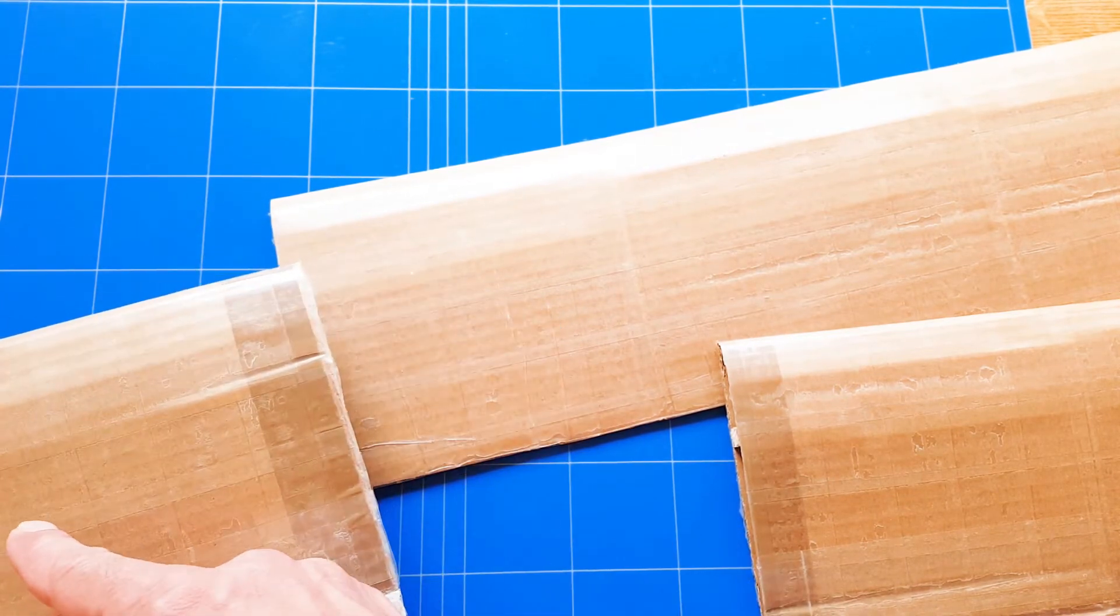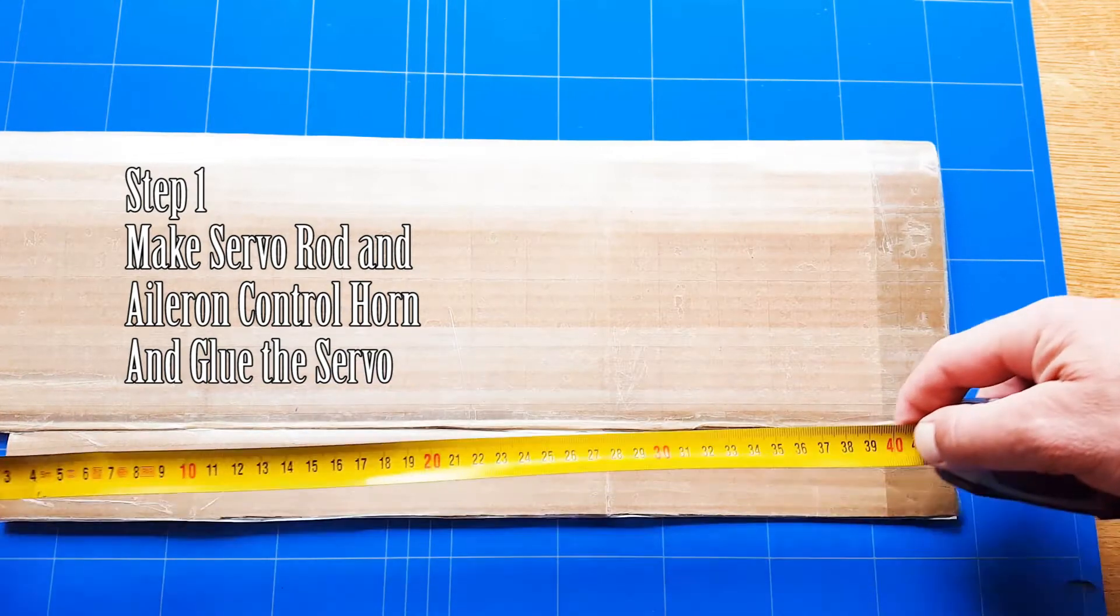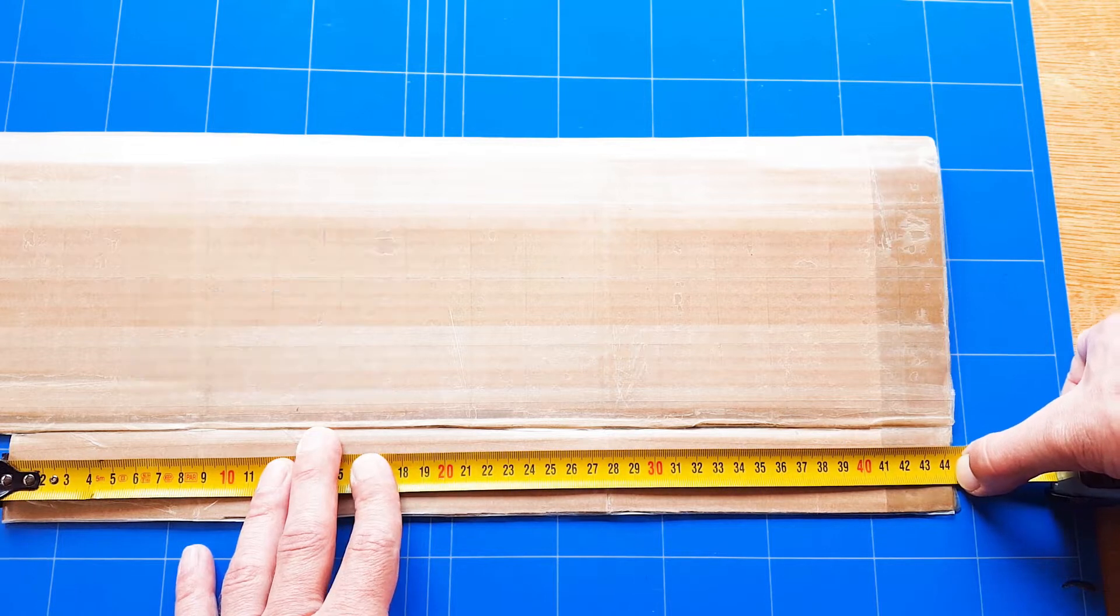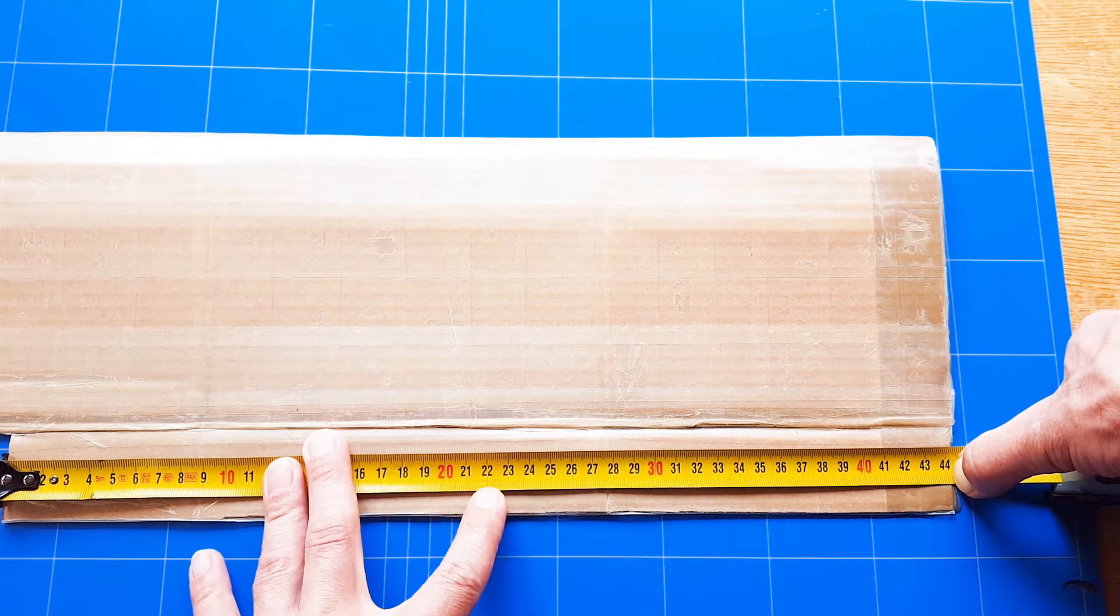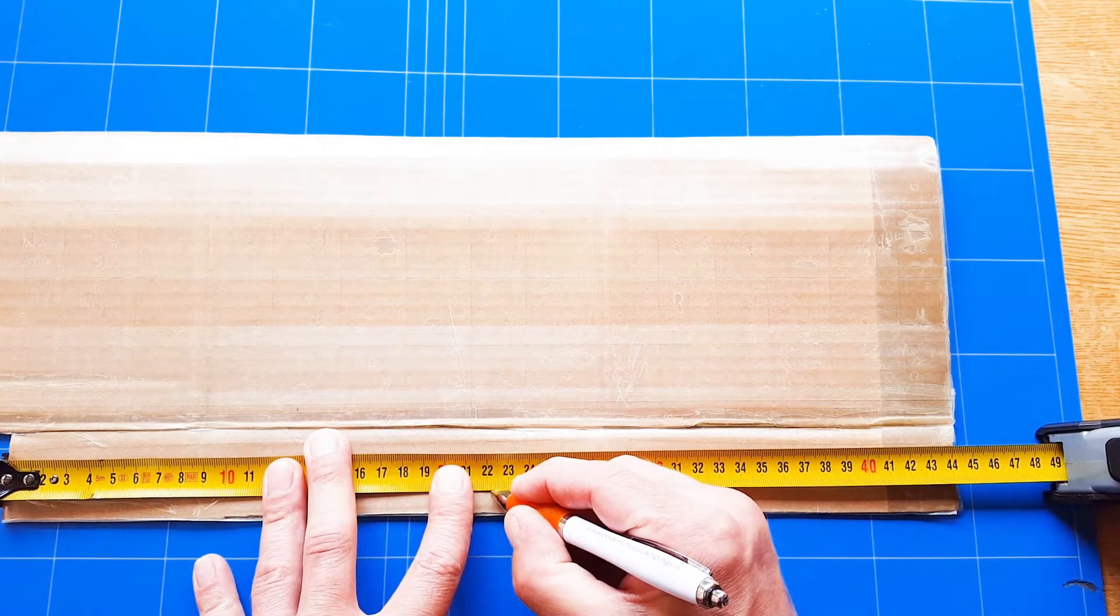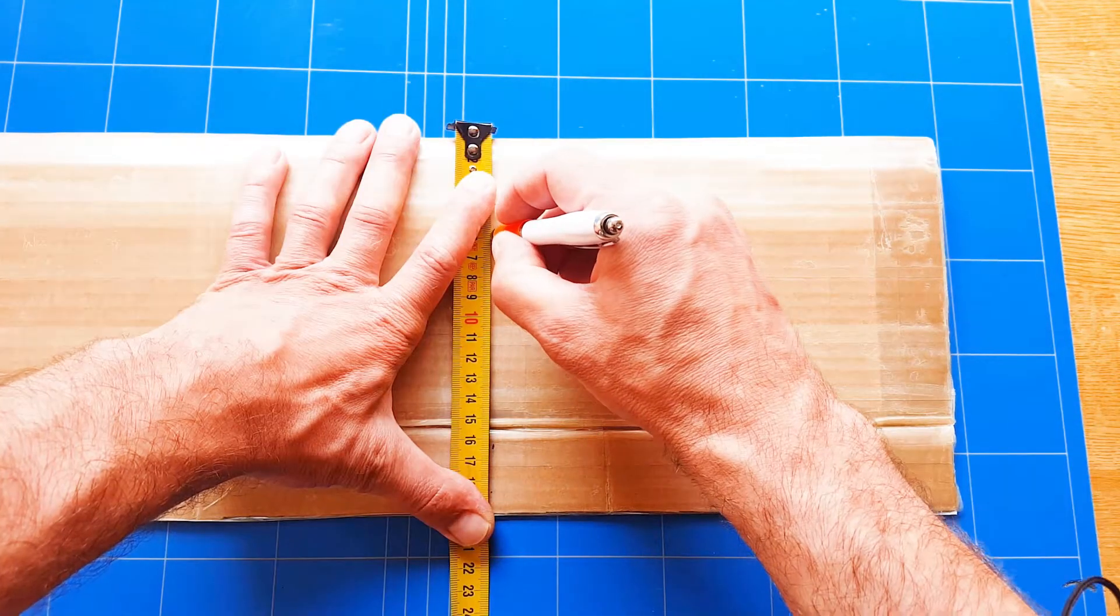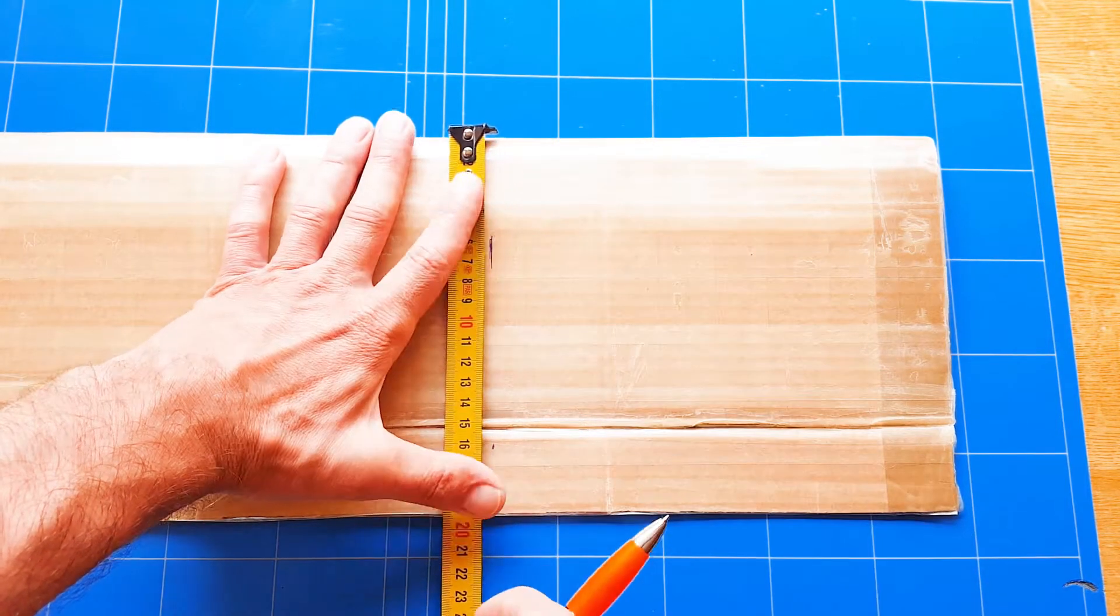Gluing the wing together will fill up this whole space where the servo leads need to go through. It's best to put the servo horn in the middle of your aileron. It is 44 centimeters and 4 millimeters, to be exact that makes 22 and 2 millimeters.